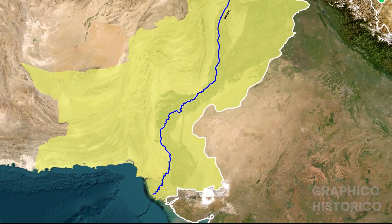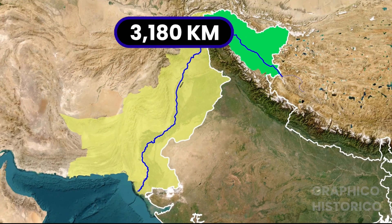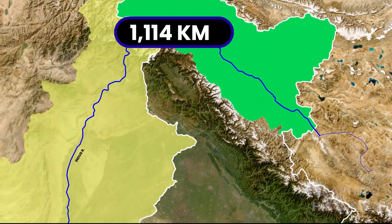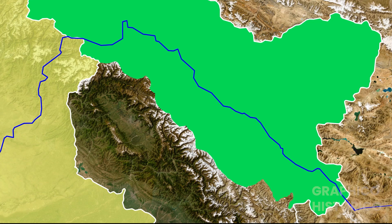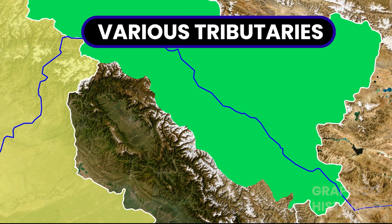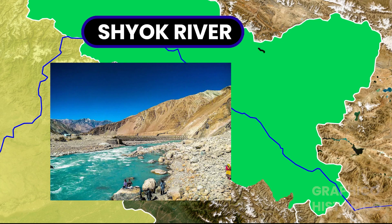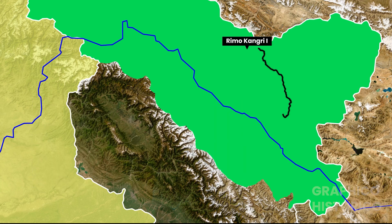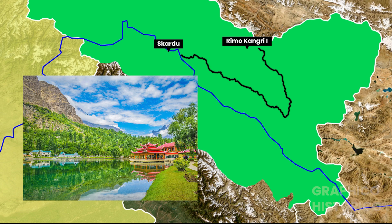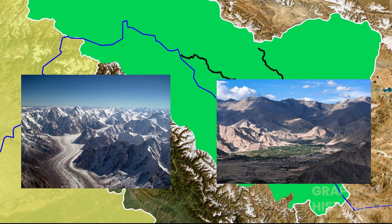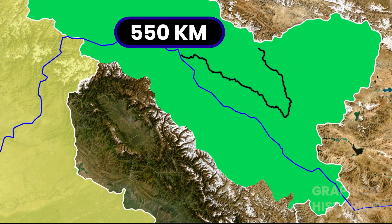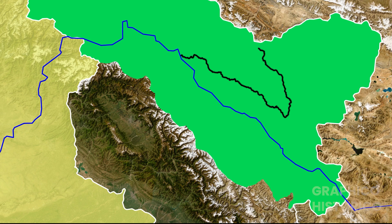The total length of this river is 3,180 km, of which 1,114 km flows in India. Now, the Shyok river, a tributary of the Indus, originates from Rimokangri. It flows south and then turns westward, meeting the Indus river near Skardu. It flows between the Karakoram and Ladakh ranges, with a total length of 550 km before joining the Indus.